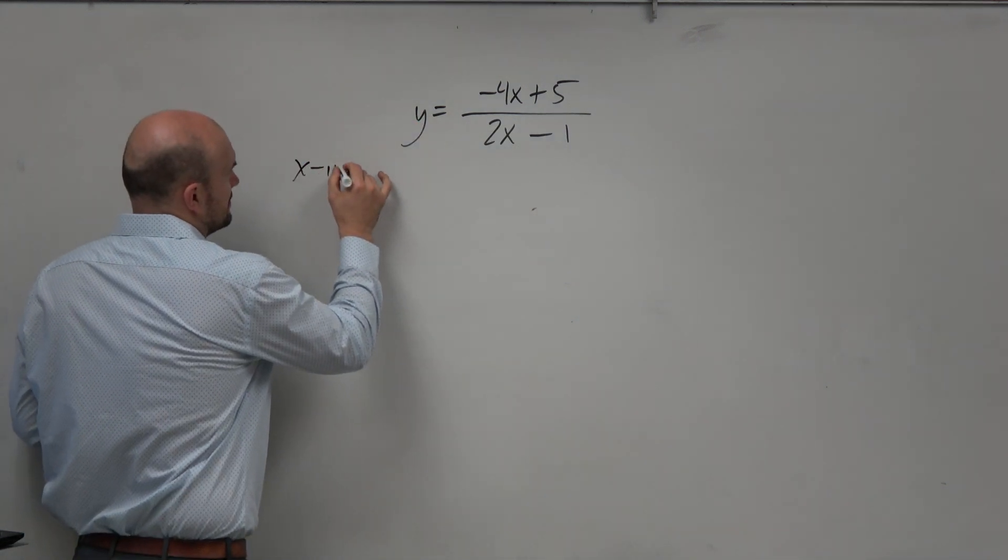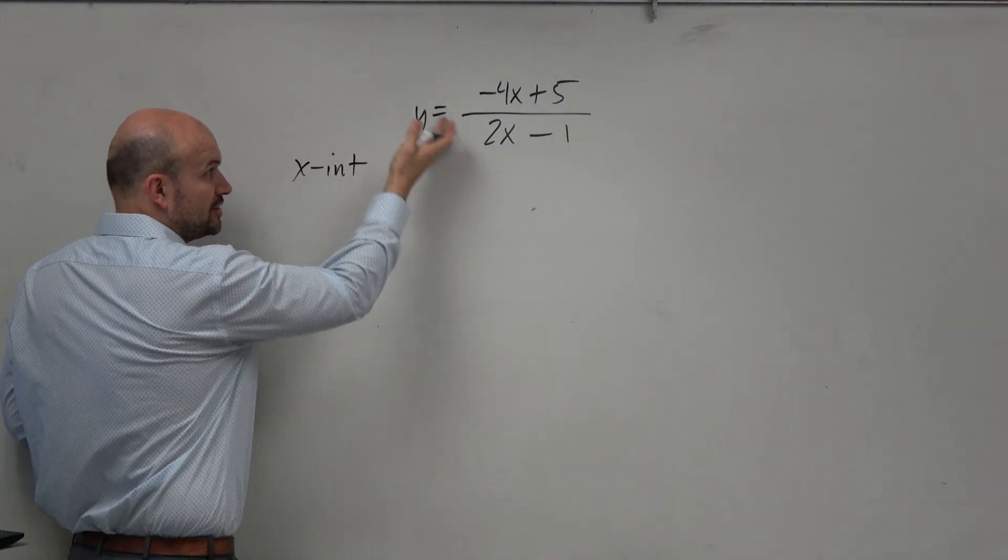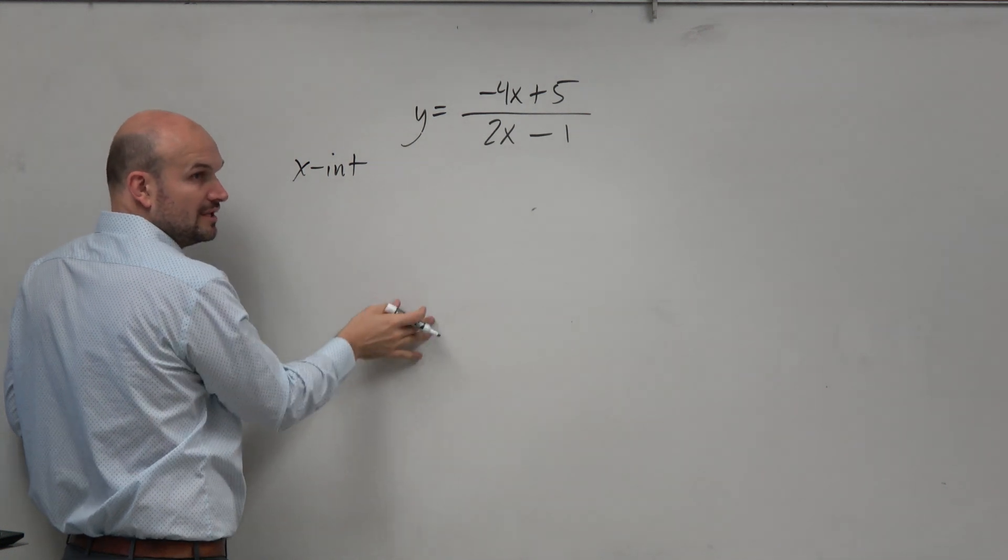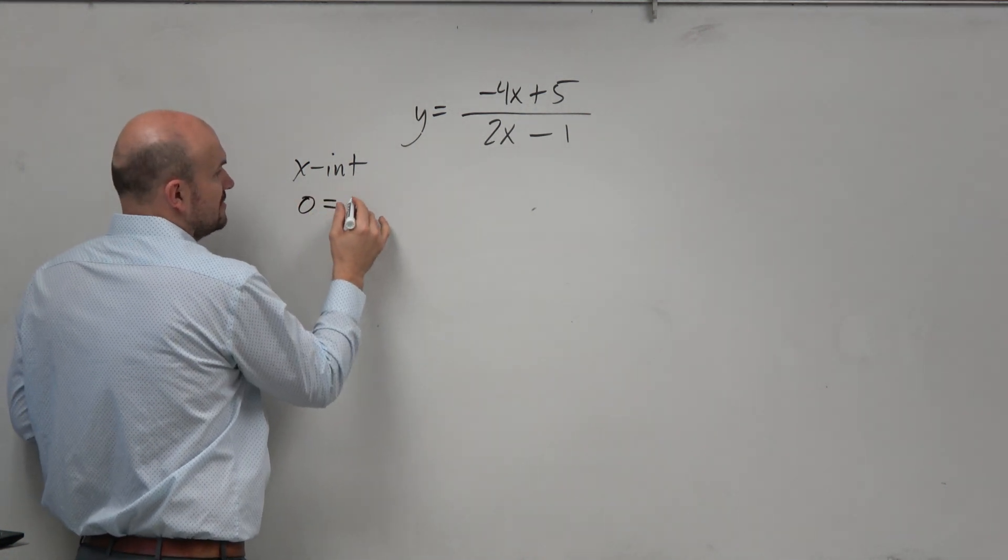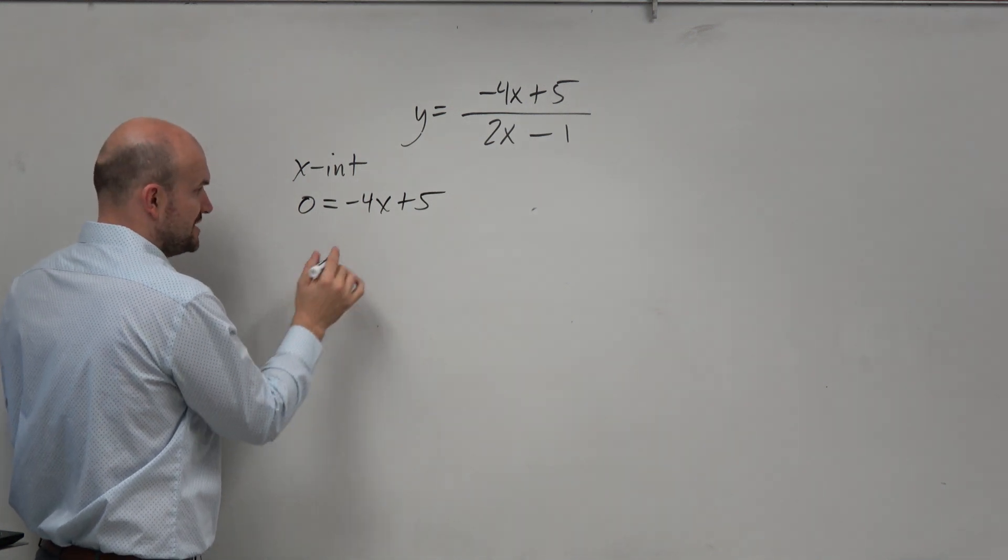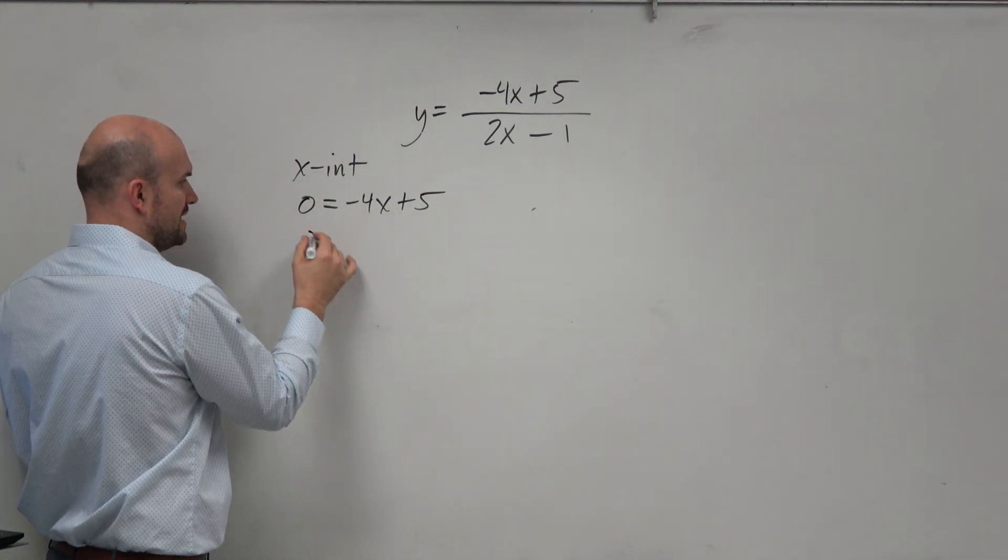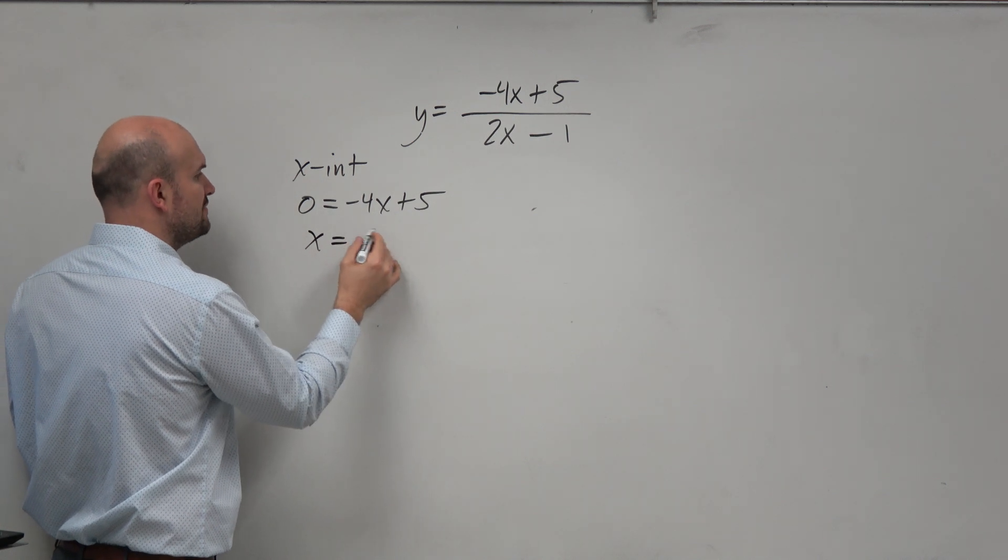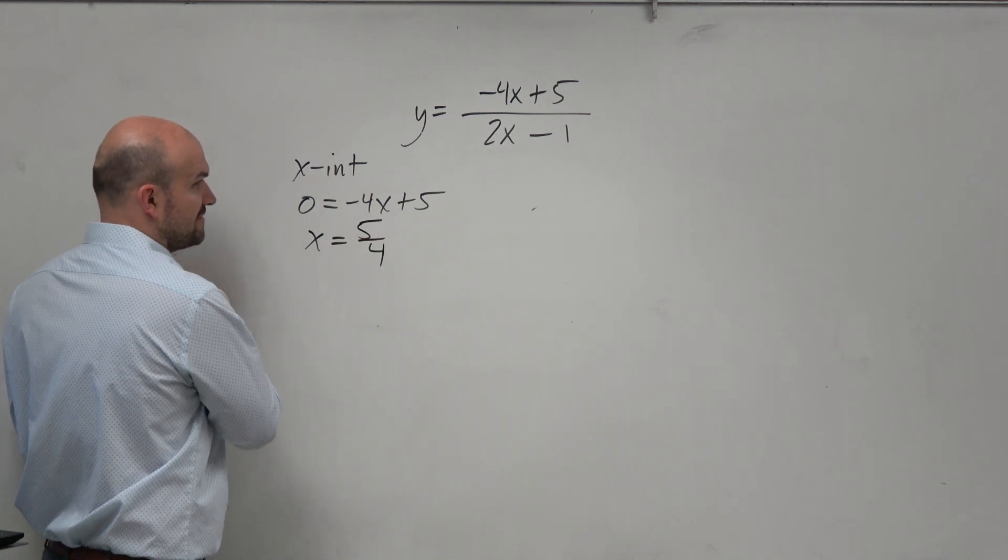So to find the x-intercept, I'm going to make my life easy. I could put y equals 0 and do all the work like I already showed you, but we can also see that negative 4x plus 5 is equal to 0. So therefore, finding the answer without showing my work, subtract 5 divided by negative 4, I get a positive 5/4.